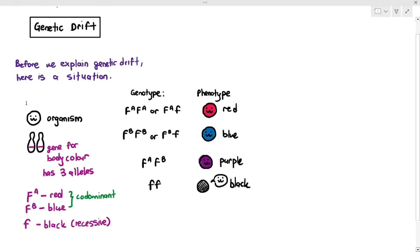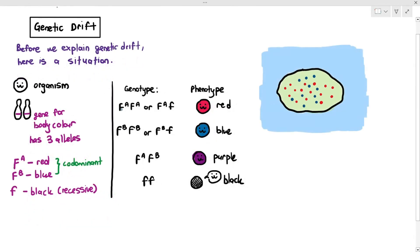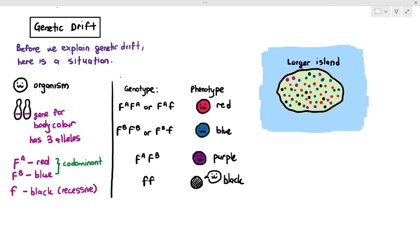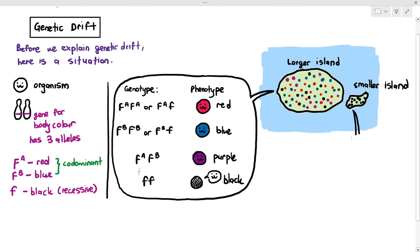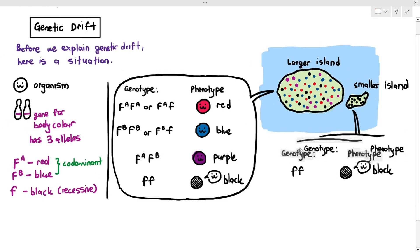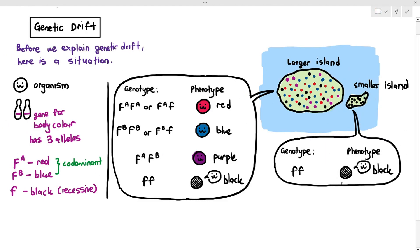On this island, all four phenotypes are present — red, blue, purple, and black. But on a smaller island nearby, there is the same species, but on that smaller island, only the black ones exist, which have the genotype of small f, small f. This is the situation I'm using to explain what comes next.